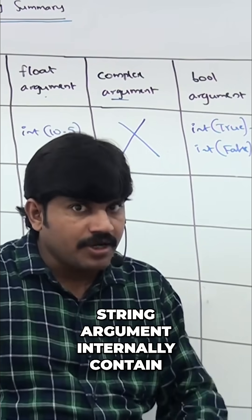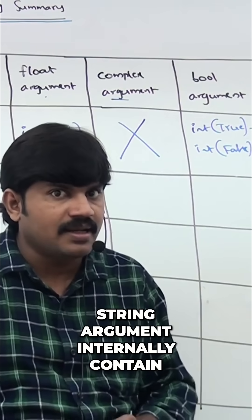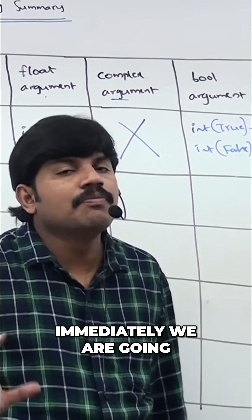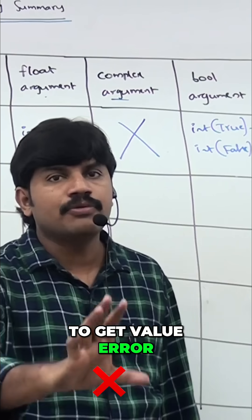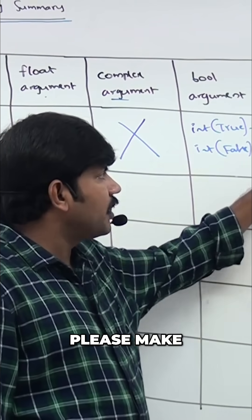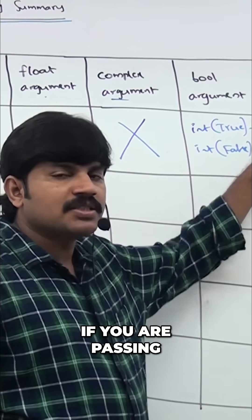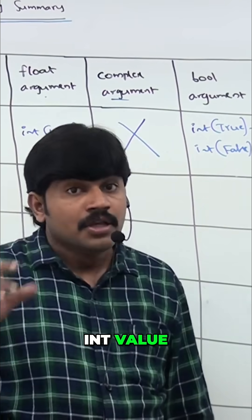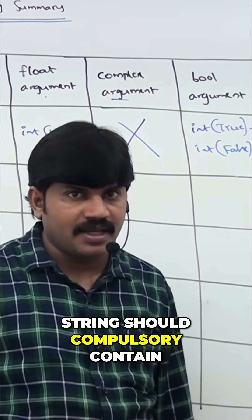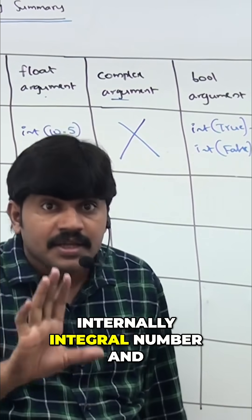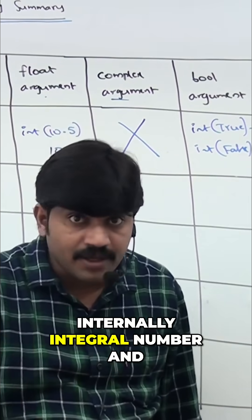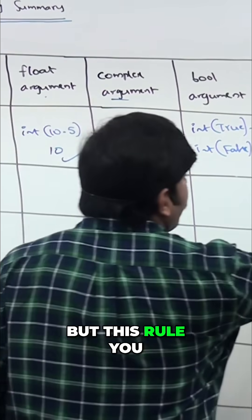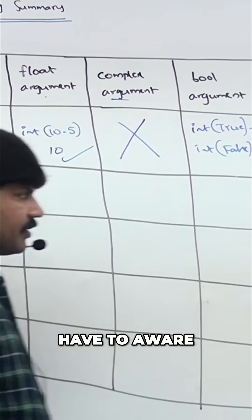If by mistake the string argument internally contains a binary, hexadecimal, or octal form value, you will immediately get a ValueError. Please make sure that if you are passing a string argument and trying to convert it to an int value, the string must compulsory contain an integral number in base 10. Conversion is possible, but this rule must be followed.